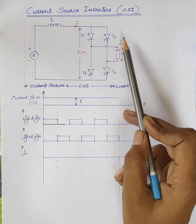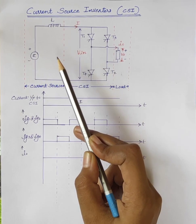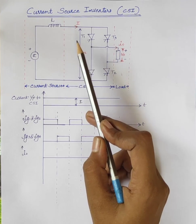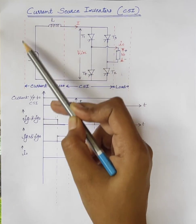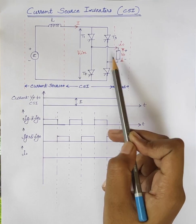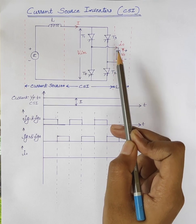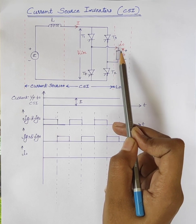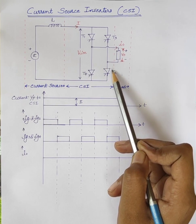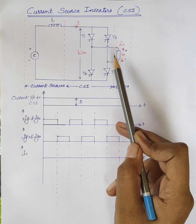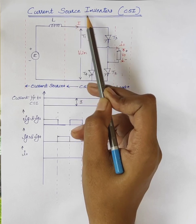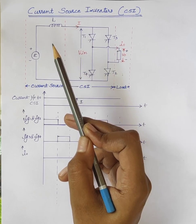In current source inverter, the input current is maintained as constant. A current source inverter converts input DC current into an AC current at its output terminals. The output frequency of AC current depends upon the rate of triggering of SCRs. Also, the amplitude of AC current can be adjusted by controlling the magnitude of DC input current.